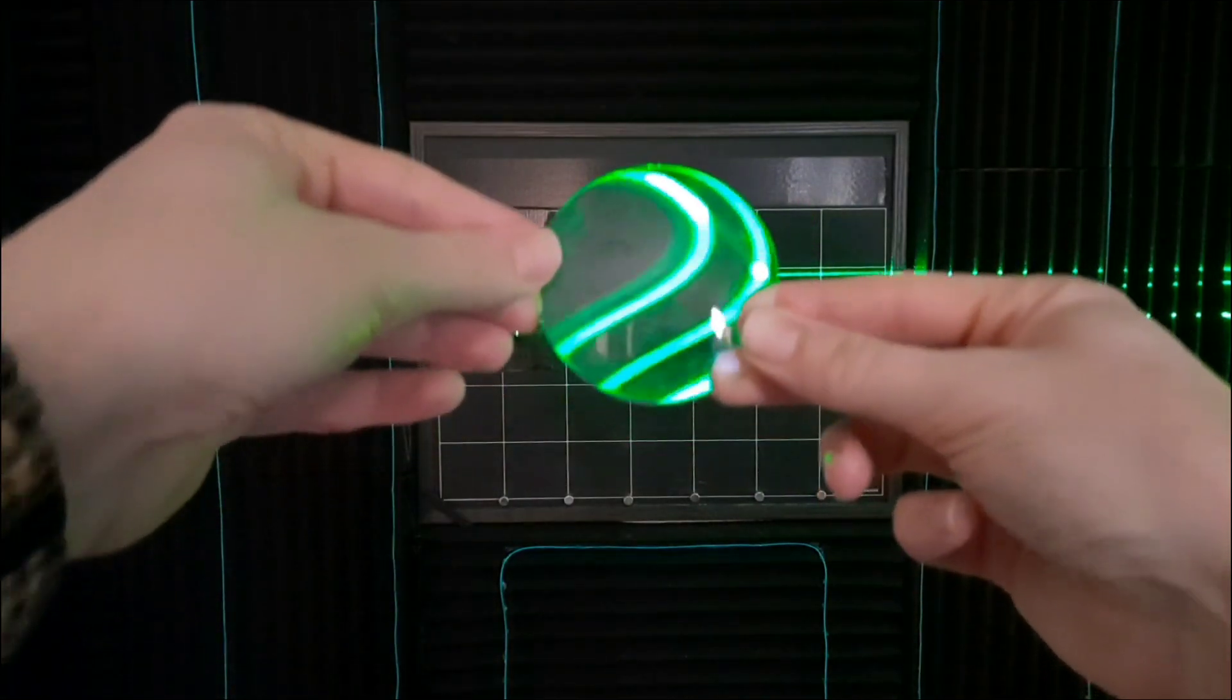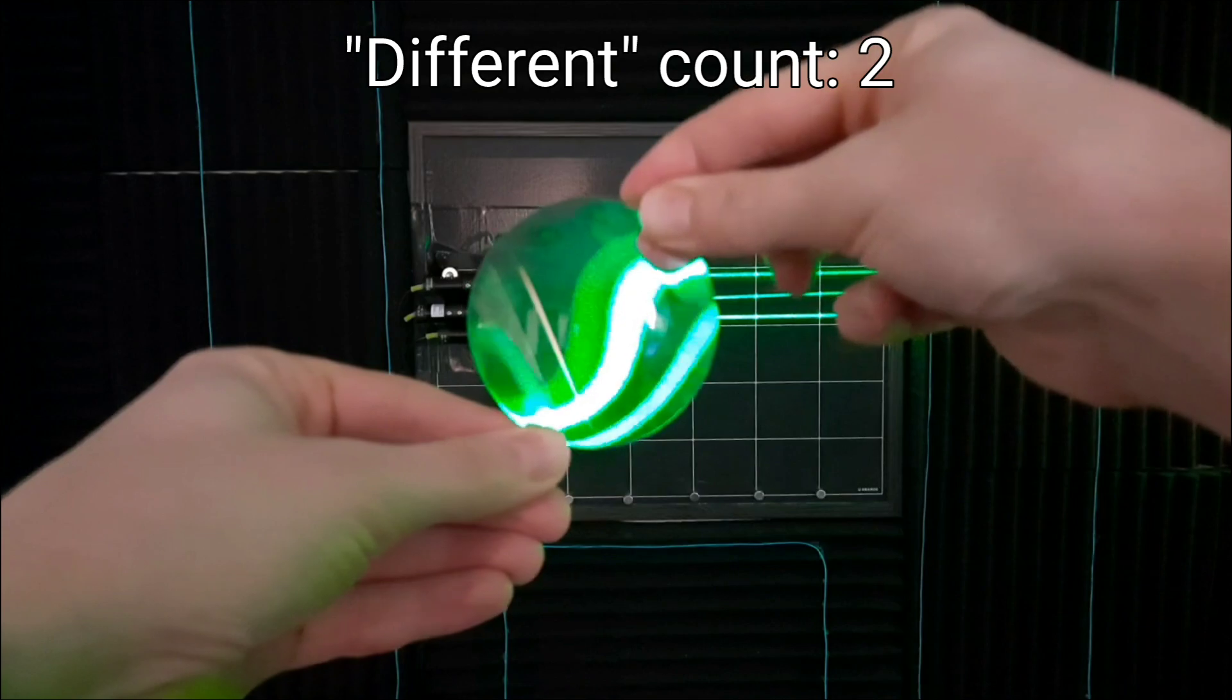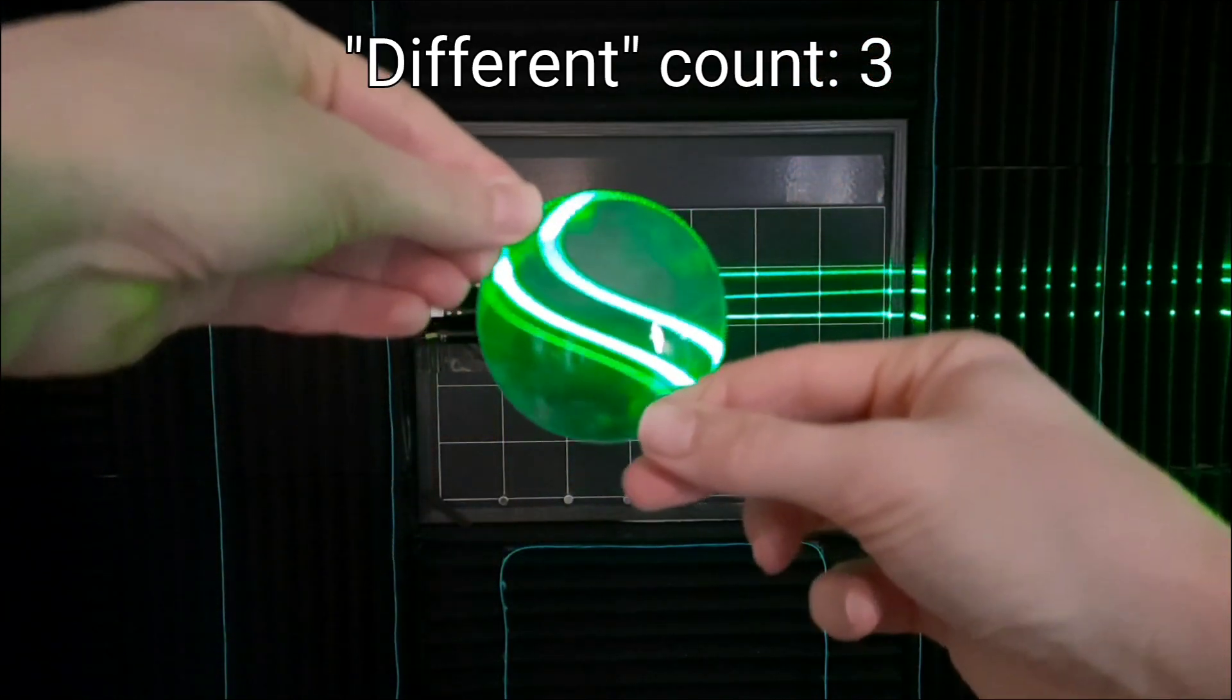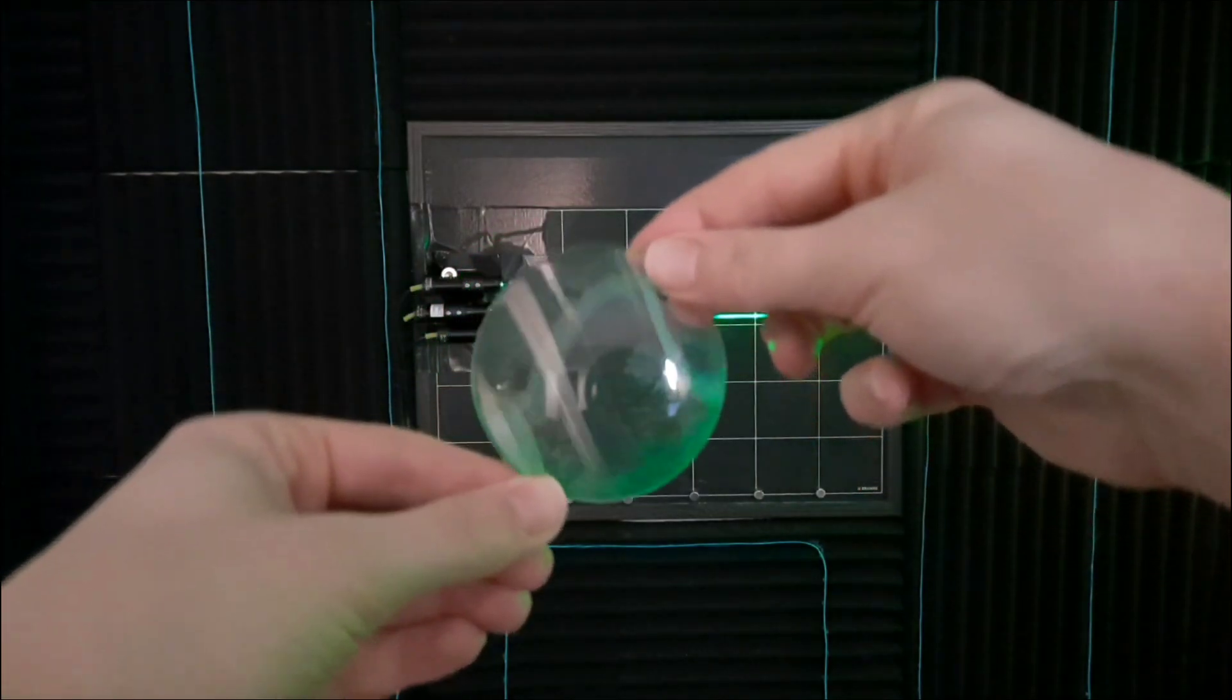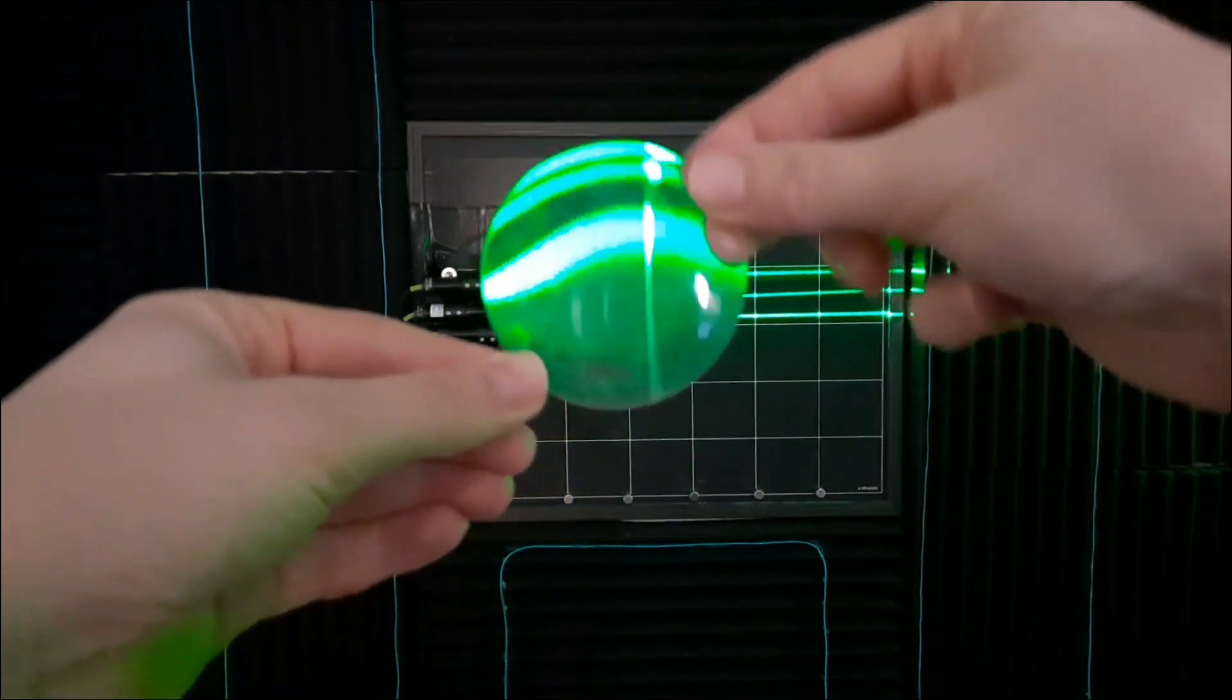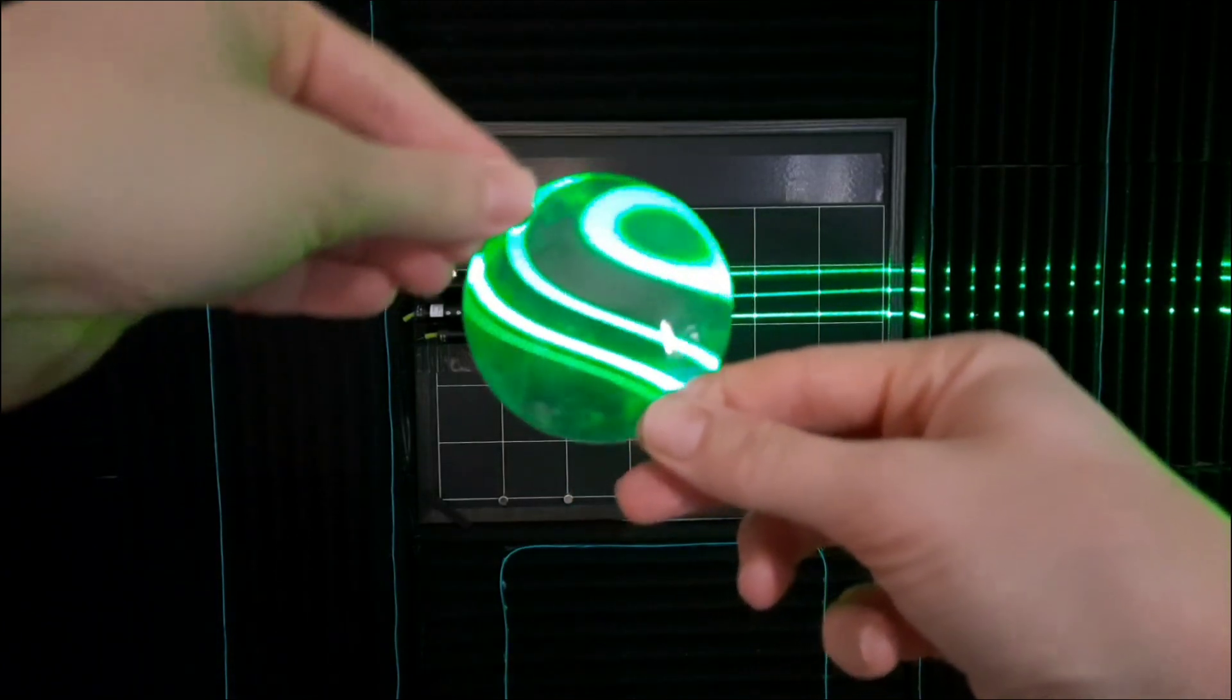Both glasses and contacts for astigmatism correct for it differently by bending light differently in different directions. So if you have glasses for astigmatism, try looking at something through your lenses and then rotate your lenses. You'll see that there are pretty different effects depending on how those lenses are oriented.